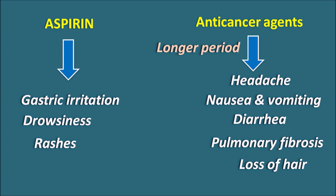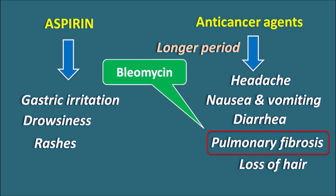Remembering the side effects of anti-cancer agents is not an easy task. But here we can see a few side effects which are specific to a particular drug. For example, pulmonary fibrosis — very few drugs like bleomycin can produce pulmonary fibrosis. In this video, we will see what are the different types of side effects and how to remember them easily using a logical approach.